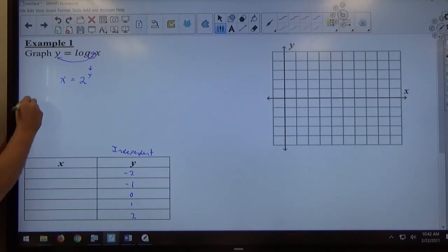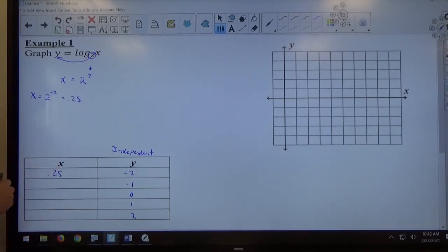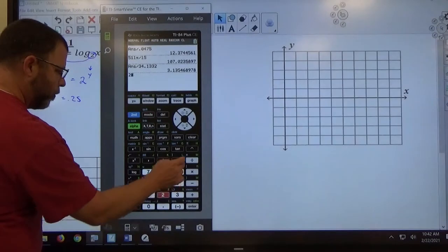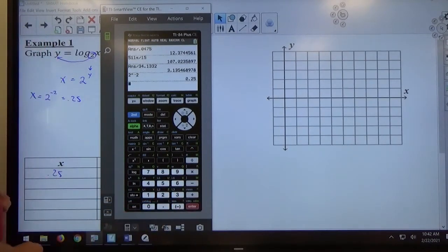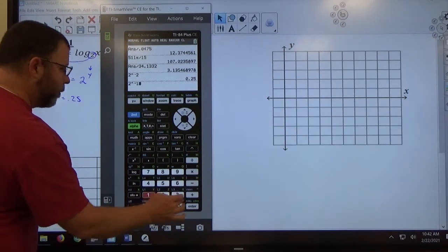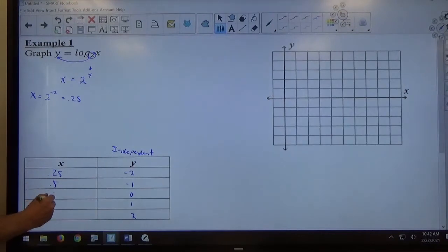So, if y is negative 2, x equals 2 to the negative 2 power, which is 0.25. If you didn't know that, you can use the calculator to evaluate. You can punch in the calculator 2 to the negative 2 power, 0.25. And then 2 to the negative 1 power is 0.5, and so on. 2 to the 0 power is 1. 2 to the first power is 2. 2 to the second power is 4.